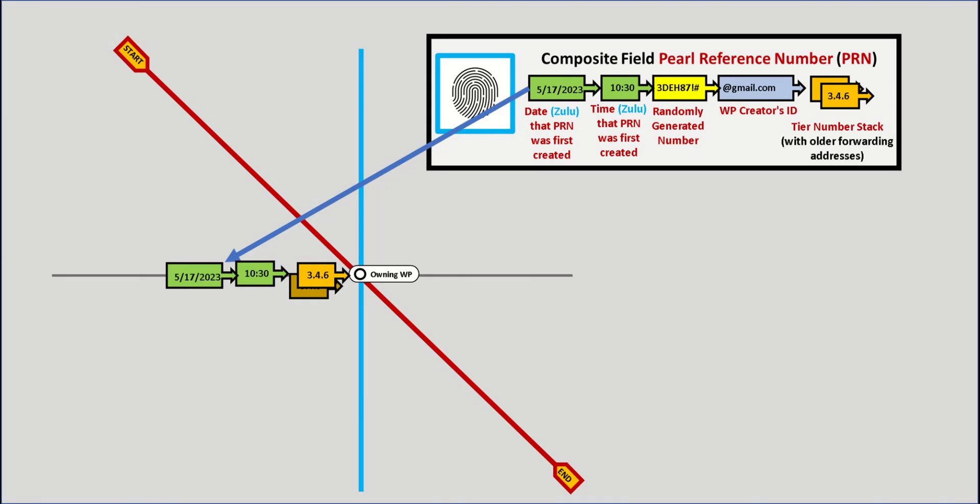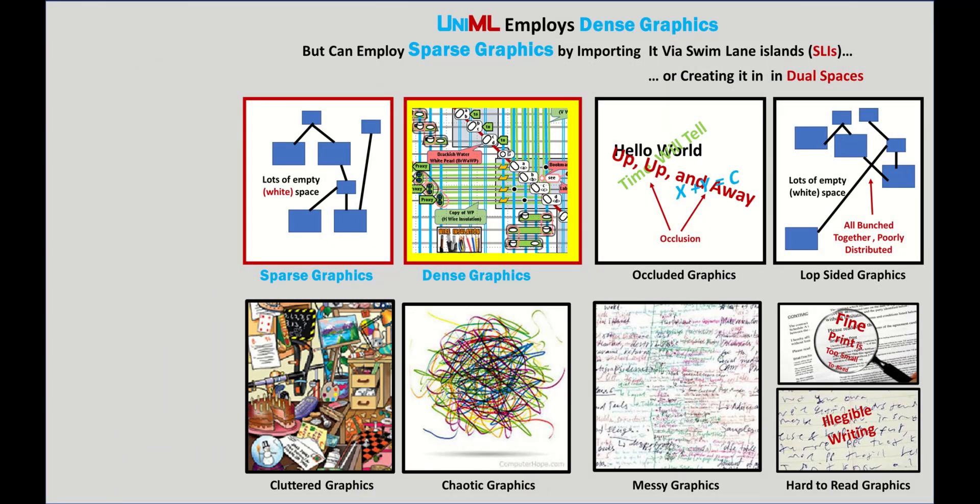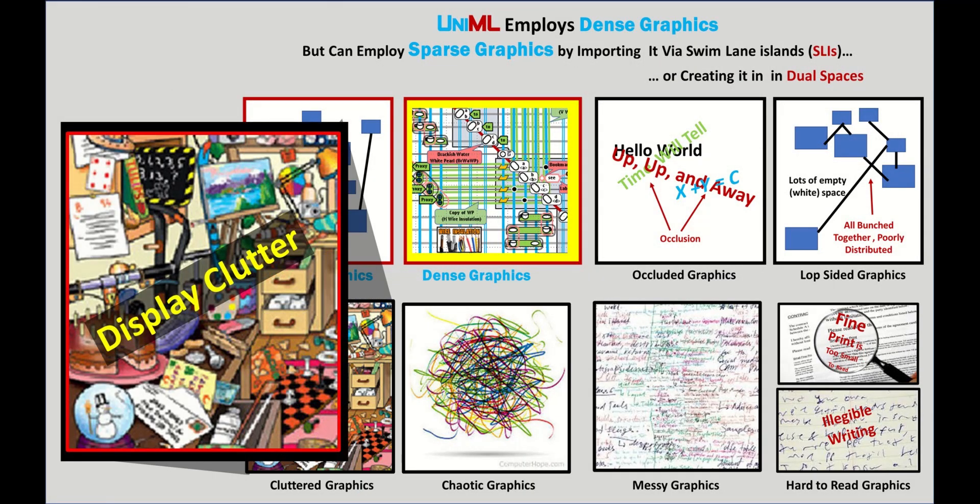Make that 10:30. And here, the date of the white pearl's first creation is added as well. And here, all the PRN types are displayed. And here, none of them are displayed, which will typically be the case most of the time for most MVs. For another basic tenet of UniML is to be able to reduce display clutter by hiding what the MV does not at that moment care to see.